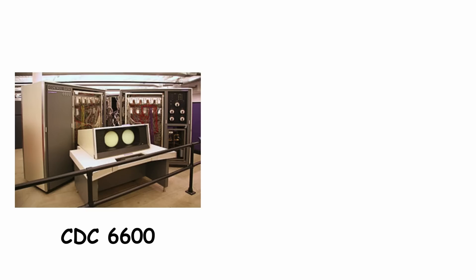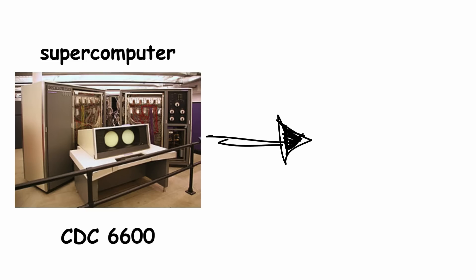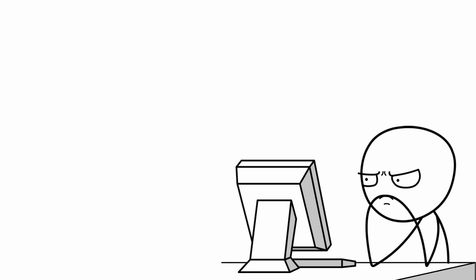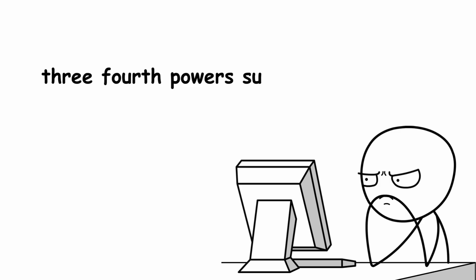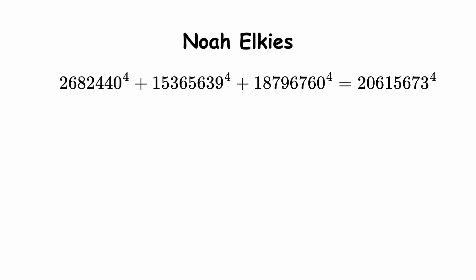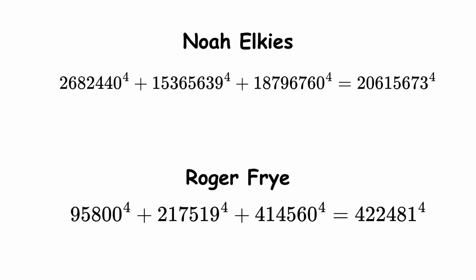By the way, the CDC 6600 was a supercomputer manufactured by Control Data Corporation. Mathematicians would later search for cases where 3 fourth powers sum to a 4th power, culminating in a 1988 example by American mathematician Noam Elkies. Later the same year, Roger Frye found the smallest possible example, shown here.